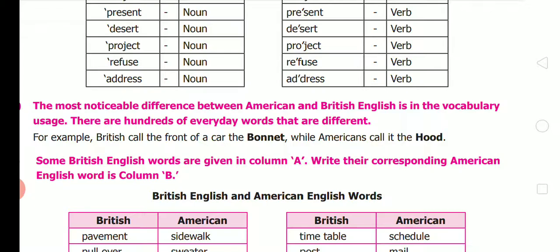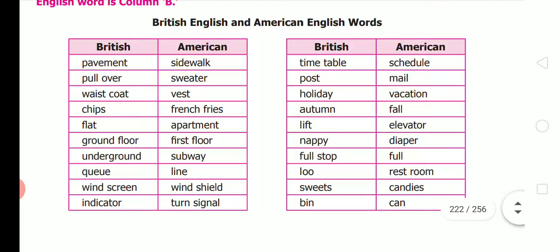Some British English words and their corresponding American English equivalents: pavement/sidewalk, pullover/sweater, waistcoat/vest, chips/french fries, flat/apartment, ground floor/first floor, underground/subway, queue/line, windscreen/windshield, indicator/turn signal, timetable/schedule, post/mail, holiday/vacation, autumn/fall, lift/elevator, nappy/diaper, full stop/period, loo/restroom, sweets/candies, bin/can.